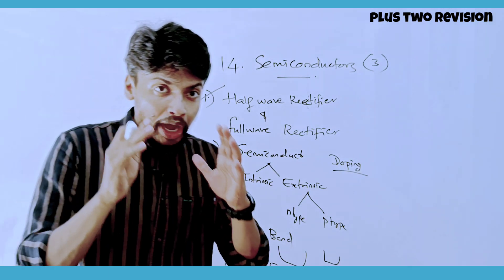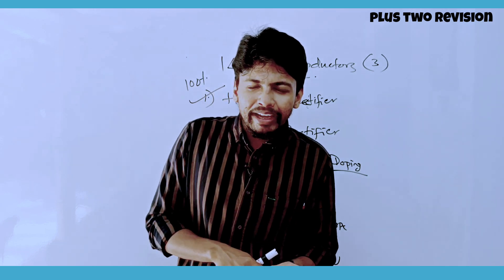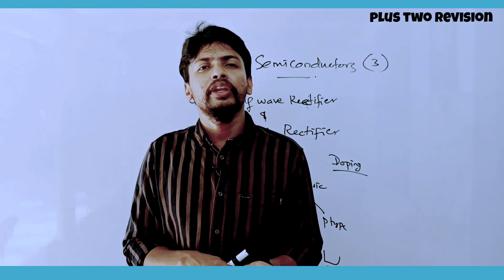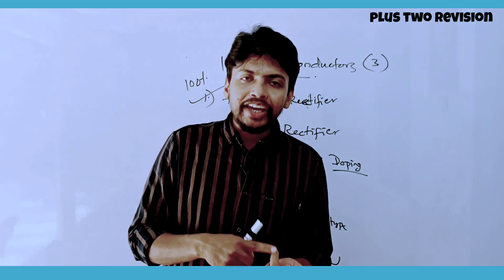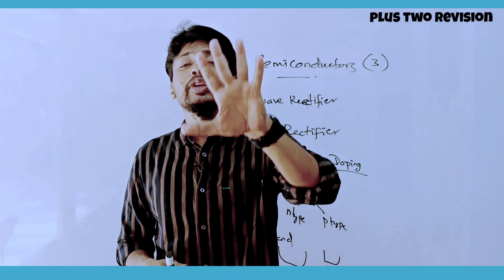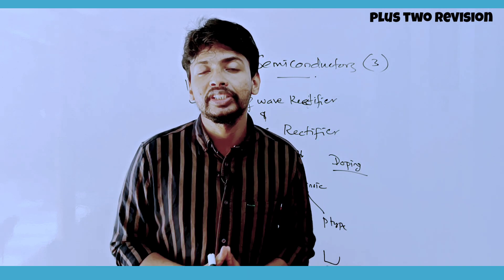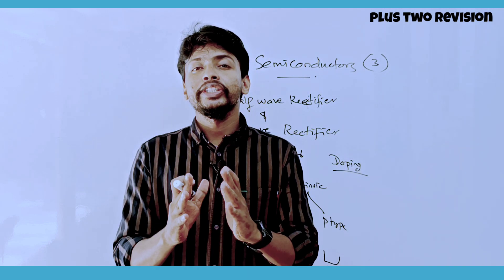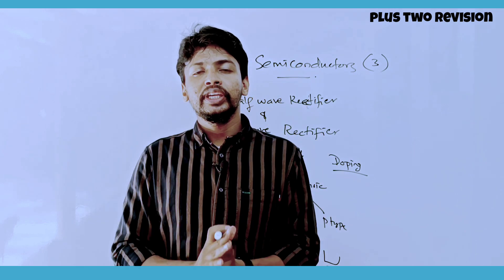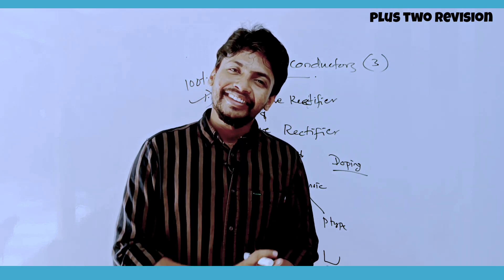To summarize, we covered five chapters: electromagnetic waves, dual nature of matter and radiation, atoms, nuclei, and semiconductors — chapters 10 through 15. Thank you.